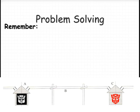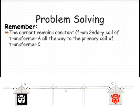So what we need to remember, firstly, current remains constant. Okay, so from the secondary coil here to the primary coil here, current doesn't get used up. That remains the same.